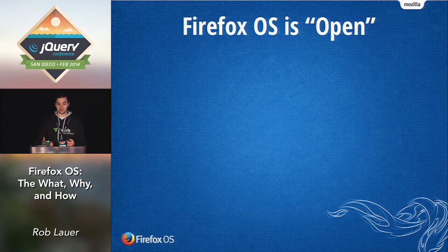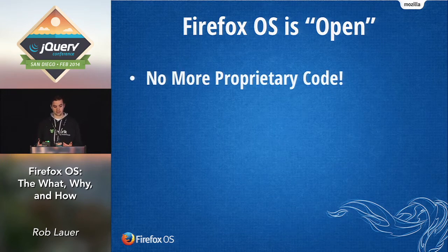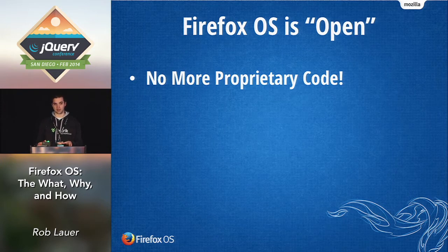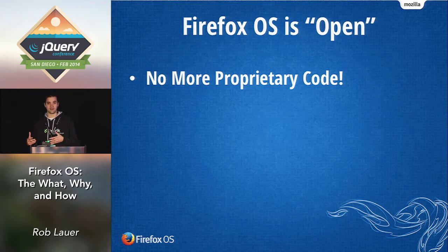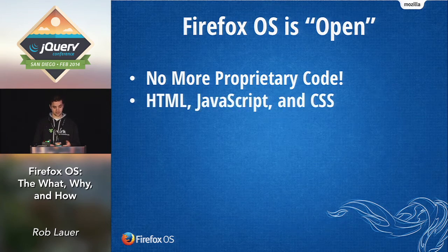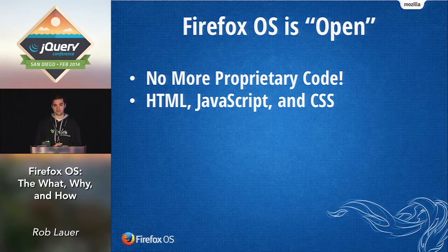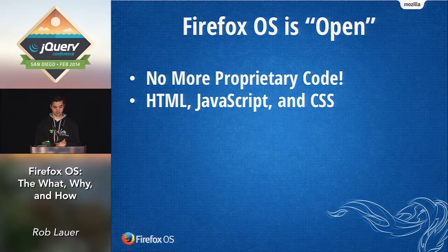We hear a lot about Firefox OS being open, but what does that really mean to us as developers? Well, first, gone is this idea of proprietary code. Mozilla has done away with the app silo model — iOS with Objective-C, Android with Java, Windows Phone with C# and XAML — and they're trying to bring the power of native app development to web developers. You're using web technologies — HTML, JavaScript, CSS — to write native apps, and in fact that's the only way to write apps on the Firefox OS platform.